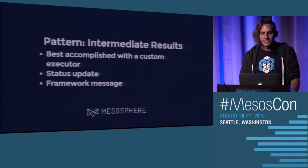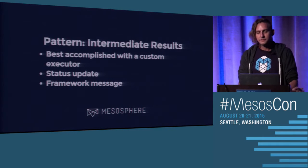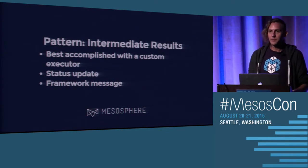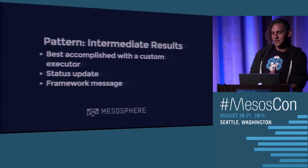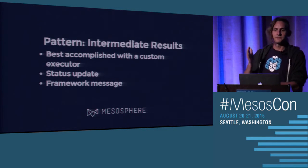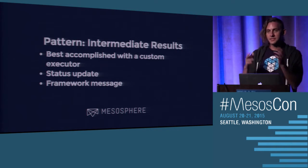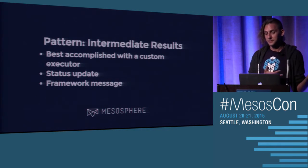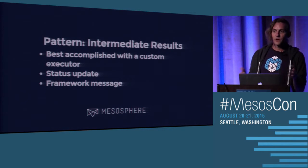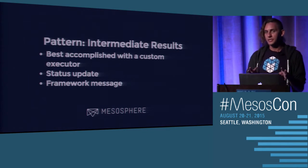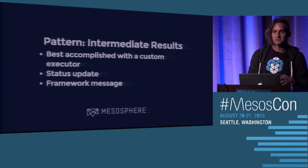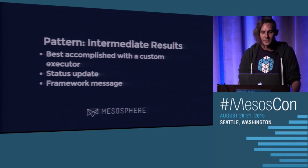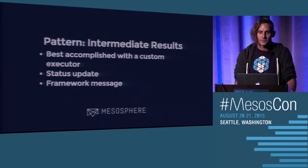Another common pattern is dealing with intermediate results, best accomplished with a custom executor. Maybe you want to tell your scheduler you're 10% done, 50% done — you can send this through custom status updates from your custom executor. Or you can use framework messages to trigger state transitions, like signaling you've reached a new stage and are ready to initialize.